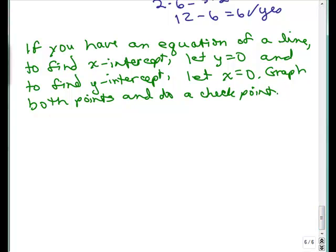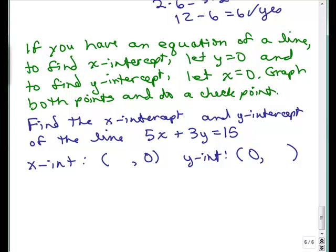How would we find the x intercept and the y intercept of the line 5x plus 3y equals 15? To get the x intercept, I have to put in 0 for y. So, write an ordered pair and immediately put in 0 for y. And now, we're going to take the equation, 5x plus 3y equals 15, plug in 0 for y.